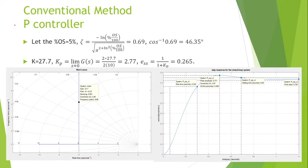We design the PID controller first. Let the overshoot become 5%, so we get zeta 0.69. The angle is 46.35 degrees. We obtain the gain from the root locus, which is 27.7, and the steady state error is reduced to 0.265.